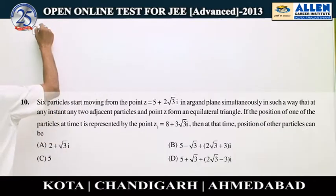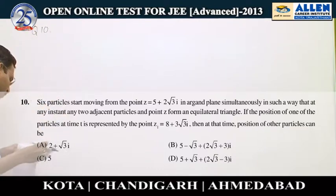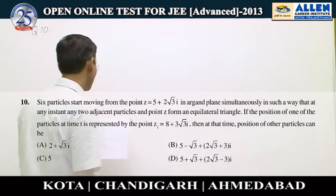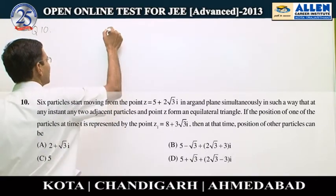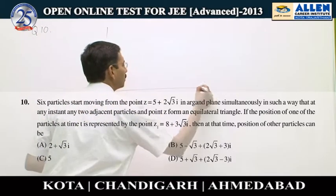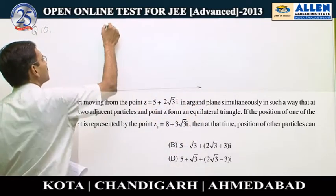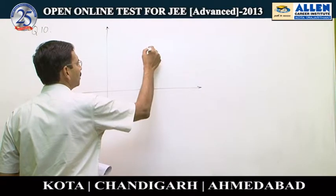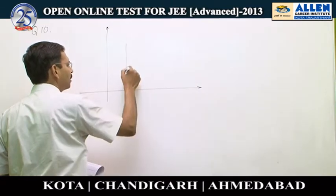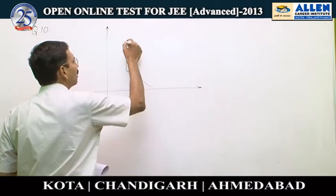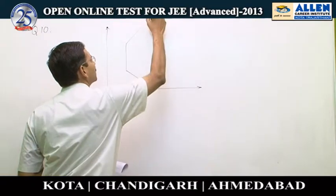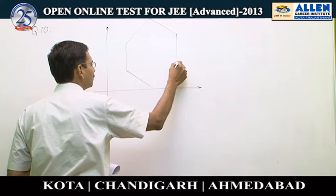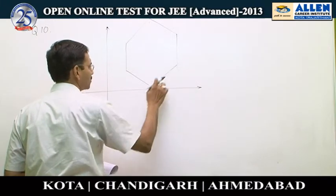Question number 10. Six particles are moving from the point 5 + 2√3i. Let us sketch it on the Argand plane — the real axis, imaginary axis — and the point is somewhere here. They are saying it is a regular hexagon, so it will look something like this.